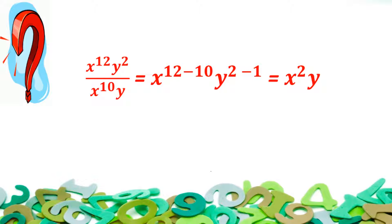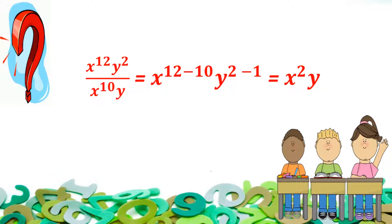The next question is: simplify x raised to power 12 into y squared, divided by x raised to power 10 into y. Collecting the terms with the same base, the given expression is equal to x raised to power 12 minus 10, into y raised to power 2 minus 1, which is equal to x squared into y. Thank you.